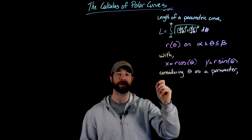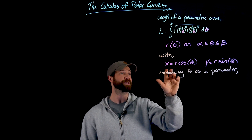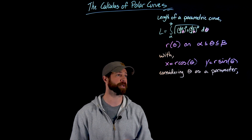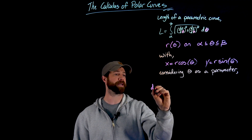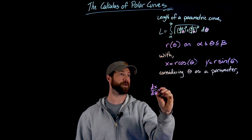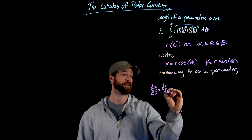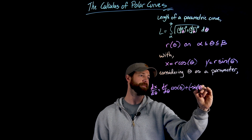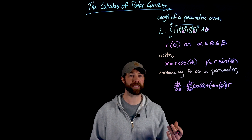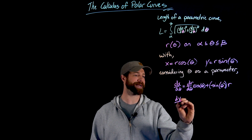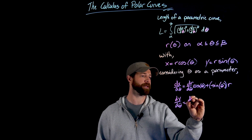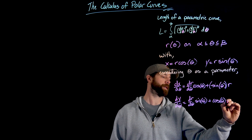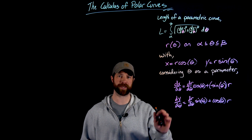To find dx/dθ and dy/dθ, I need to remember that r is also a function of θ. Since both factors in each expression change with respect to θ, I have to use the product rule. Differentiating x = r·cosθ gives dx/dθ = (dr/dθ)·cosθ − r·sinθ. Differentiating y = r·sinθ gives dy/dθ = (dr/dθ)·sinθ + r·cosθ.